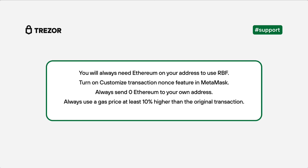Things to remember: when using the bump fee feature in Suite, you will always need Ethereum on your address to use this feature. When cancelling transactions via MetaMask, turn on the Customize Transaction NONCE feature. Always send 0 Ethereum to your own address with the lowest NONCE of the stuck transaction. Always use a gas price at least 10% higher than the original transaction, otherwise the network might not accept this transaction.